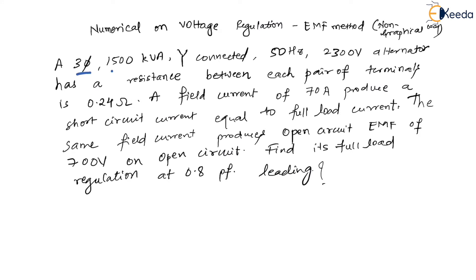A three-phase 1500 kVA, star-connected, 50 Hz, 2300 volt alternator has a resistance between each pair of terminals of 0.24 ohms. A field current of 70 amperes produces a short circuit current equal to the full load current. We will need to calculate the full load current.